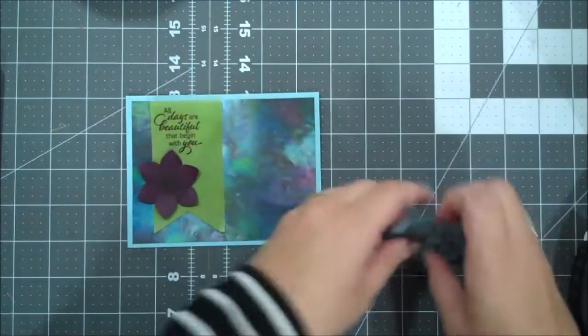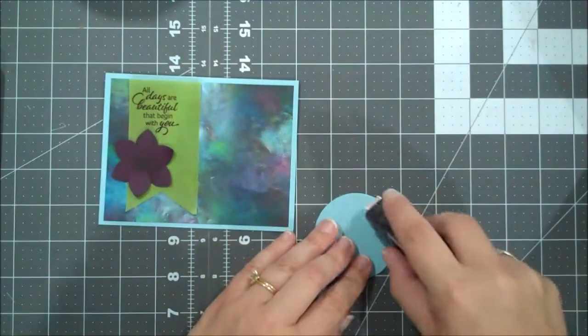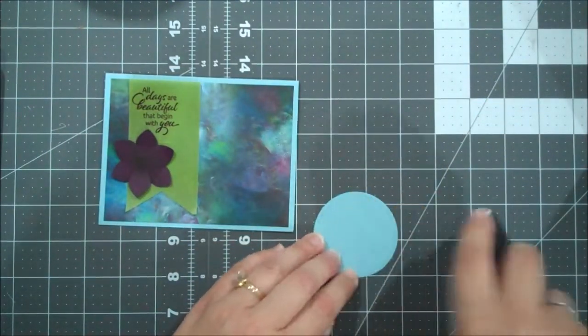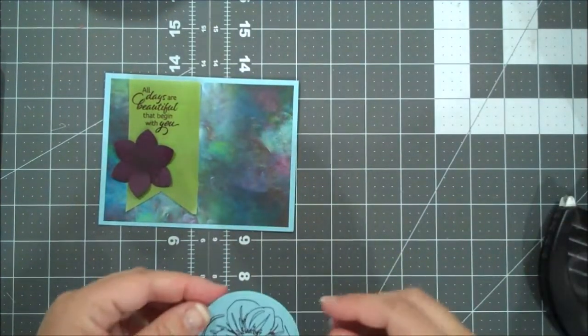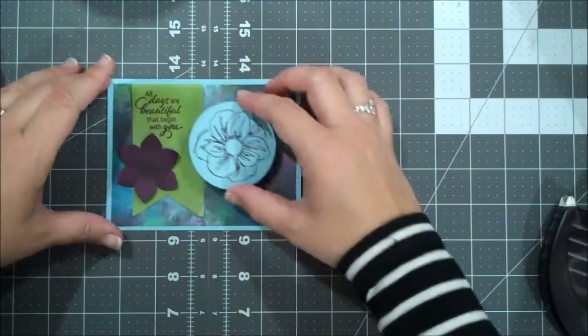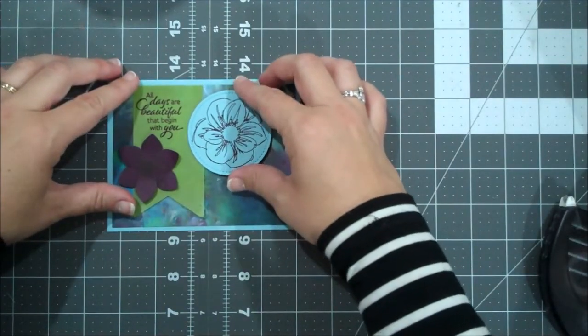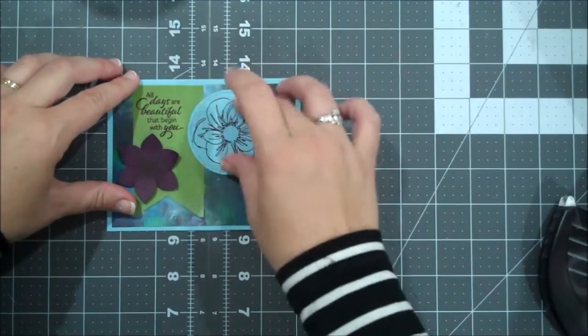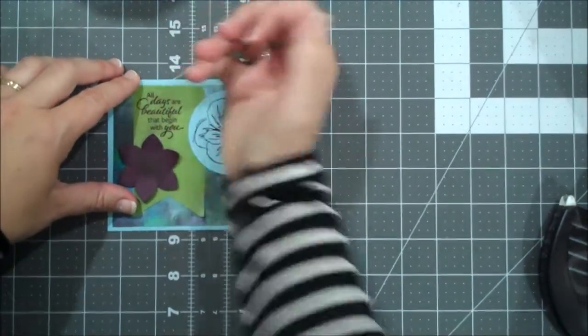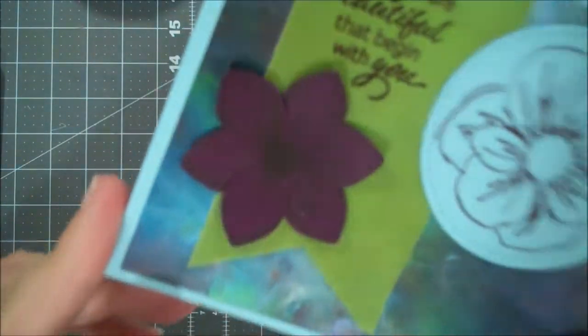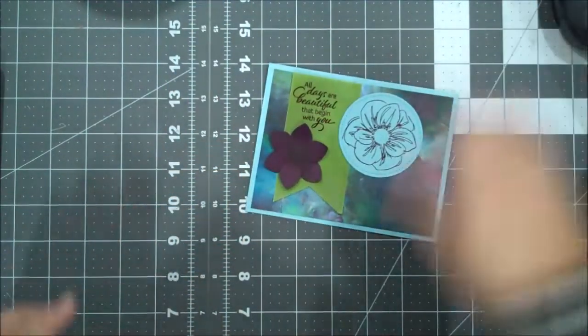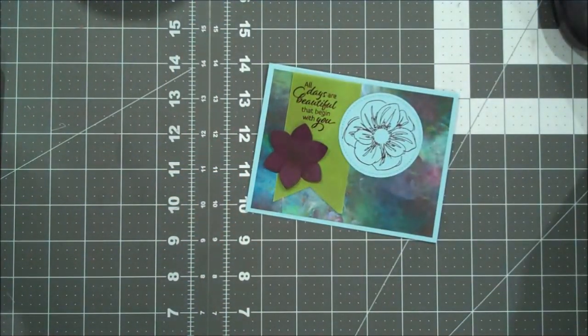Pull up our petals there. And then for our blue one, I'm going to put adhesive on the back of this. And then we want to, and this should help us hold that vellum down. So there is our card. Hopefully you can see that flower. I know at a distance, it's hard to see.